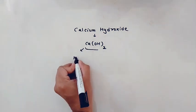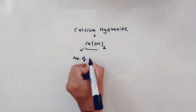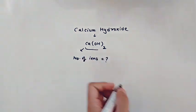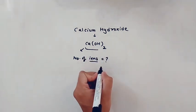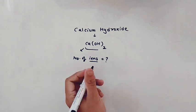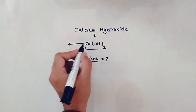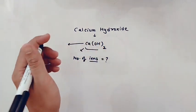So now we have to find the number of ions in this compound. Number of ions and number of charges are two different things. Let's see this. First of all, we know that Ca(OH)₂, that is calcium hydroxide, is an ionic compound.